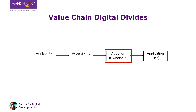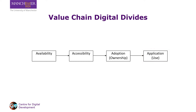Sometimes they talk about whether or not ICTs are owned — for example, that there is a divide between those people who own a smartphone versus those who do not. And sometimes they talk about whether or not ICTs are used — for example, that there is a divide between those who use advanced apps on their phones versus those who do not. These divides are all different.